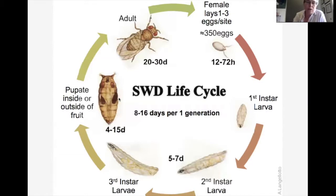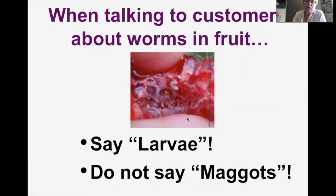Then they go through a pupal stage that takes about four to 15 days. They can pupate inside the fruit or outside — if outside, they typically drop to the ground. Then new adults emerge from those pupae, giving a total of eight to 16 days for one generation. We've been trying to use the word 'larvae' rather than 'maggots,' which is technically correct — the larva of a fly is a maggot — but the general public has a great fear of the word 'maggot,' worrying they might be attacked in their gut, which is not true.